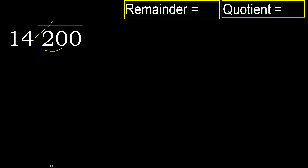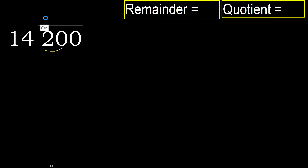But not greater. 14 multiplied by 2 is 28. 28 is greater. Multiplied by 1 is 14. 14 is not greater. Ok, 20 minus 14 is 6.